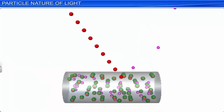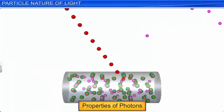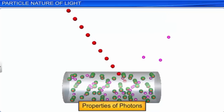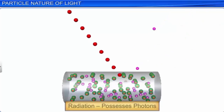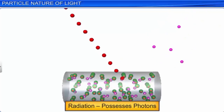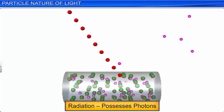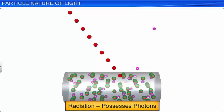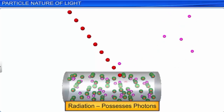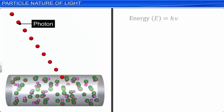Let's now summarize the properties of photons. In the interaction of radiation with matter, like in the case of photoelectric effect, it seems as though radiation is made up of particles called photons. Each photon has energy E equal to hν. Since ν = c/λ, we have E = hc/λ, where λ is the wavelength of light used. And momentum p = hν/c.